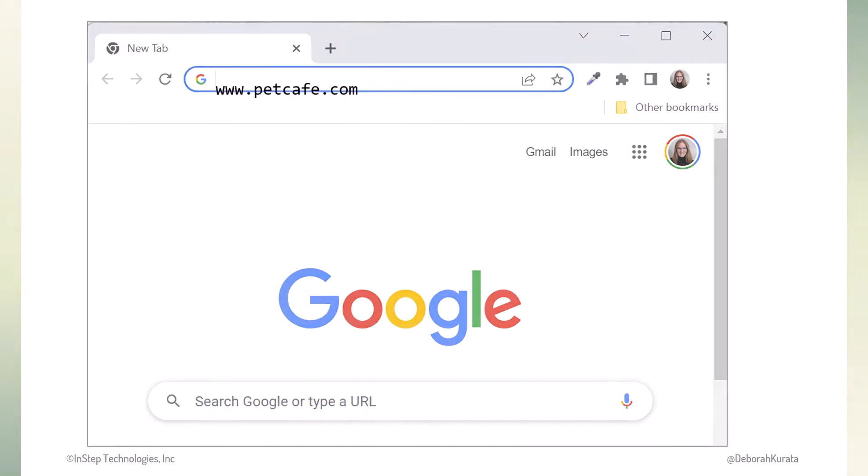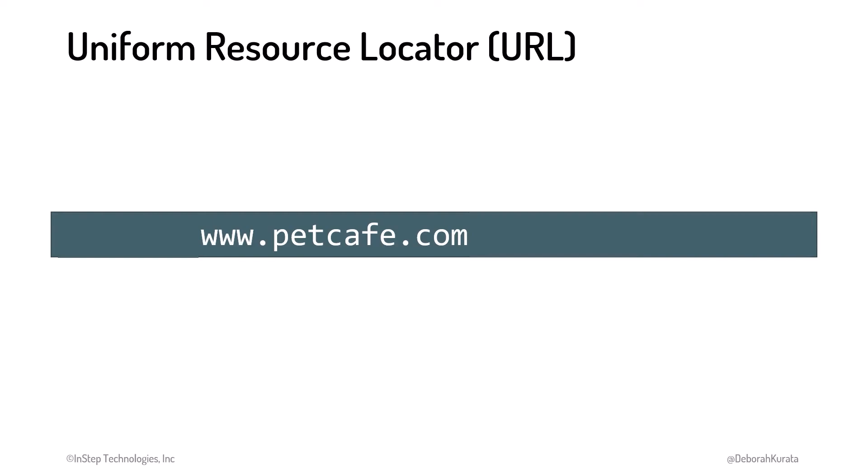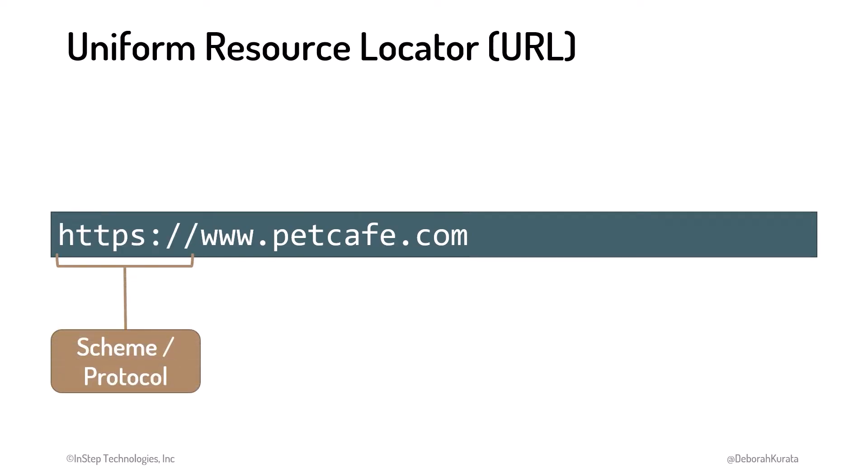A URL is primarily comprised of three parts. First is the scheme or protocol. It defines how the browser sends and receives information on the web. Think of it like picking the postal service, UPS, or FedEx when you send a package.